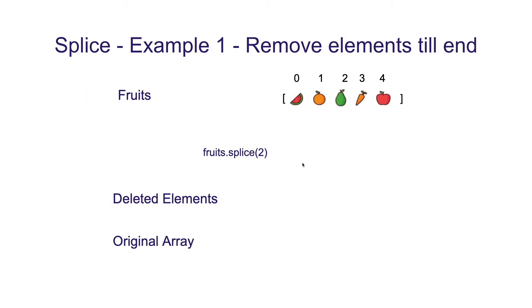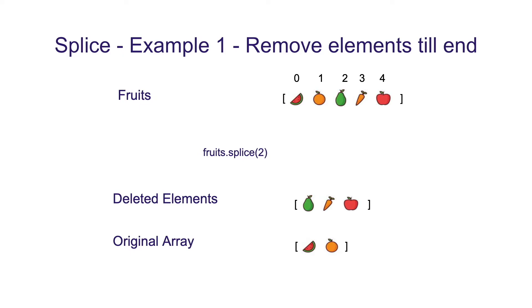In example 1, we are going to use splice to delete elements from a start index to the end of the array. We have an array of 5 fruits and we call splice with the parameter 2, meaning we want to delete all elements starting from index 2 till the end. This results in the deleted array containing elements at index 2 to 4, and updates the original array to contain only elements at index 0 to 1.